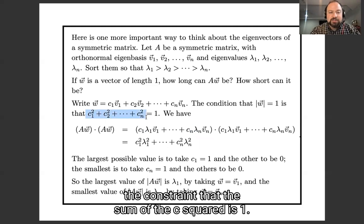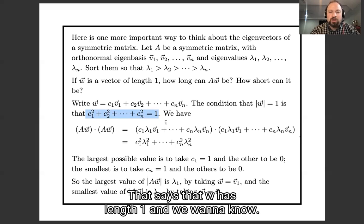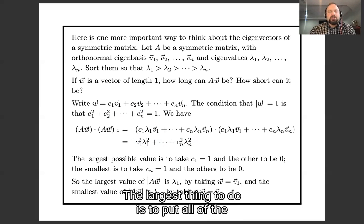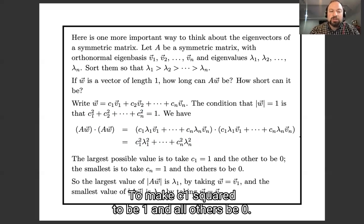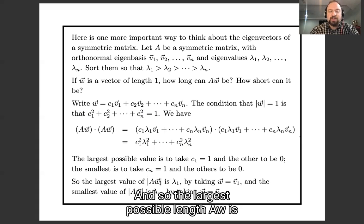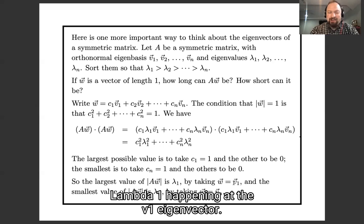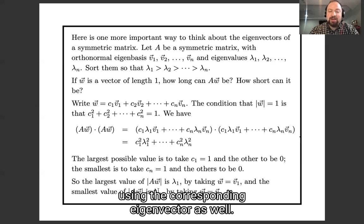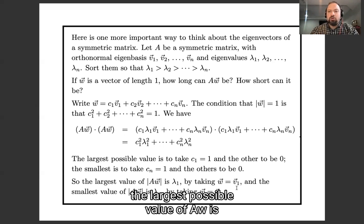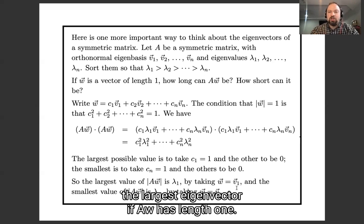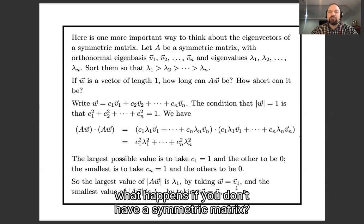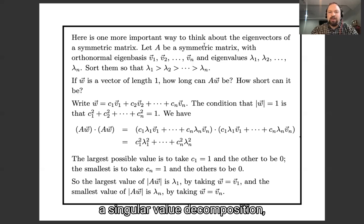So for symmetric matrices, the largest possible value of |Aw| is the largest eigenvalue, when w has length one. The largest eigenvector gives the largest stretching of the matrix. You might wonder what happens if you don't have a symmetric matrix — what's the largest stretching then? That's going to lead you to the notion of singular value decomposition, which is where we're going next.